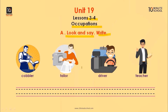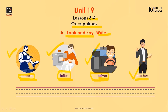আমরা এখানে আবারো কিছু ছবি দেখতে পাচ্ছি। এই শুরুর ছবিটিতে আমরা দেখতে পাচ্ছি — আর যে কাপড় পরিধান করছে, আমরা যাকে বলি টেইলর। টেইলর বা দর্জি। এবারে আমরা দেখতে পাচ্ছি একজন ব্যক্তি গাড়ি চালাচ্ছে, আর যাদেরকে আমরা বলি ড্রাইভার — ড্রাইভার বা গাড়িচালক।